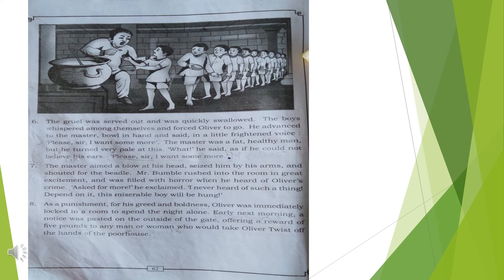The gruel was served out and quickly swallowed. The boys whispered among themselves and forced Oliver to go to the master. Oliver advanced towards the master with a bowl in his hand and said in a little frightened voice, 'Please sir, I want some more.' The master was a fat, healthy man but he turned pale at this. 'What?' he said, as if he could not believe his ears. 'Please sir, I want some more.' There was a pleading voice from Oliver wanting more food.